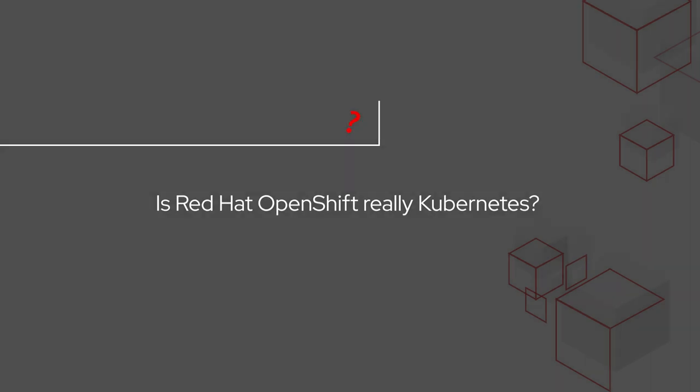I get asked that question a lot. OpenShift is not only Kubernetes, it's the best form of Kubernetes. OpenShift provides an enterprise Kubernetes solution that can support both traditional and cloud native applications, but also can support those applications across any environment you want to run them in, whether that's your data center, any of the public clouds, or out at the edge.